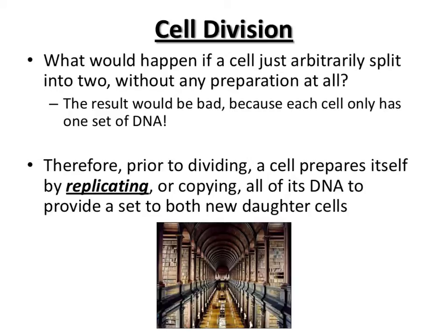If a cell were to just randomly split into two without preparing, that would be bad. The cell would probably not evenly divide all of its organelles, and most importantly the DNA would probably not divide correctly. Think of it like opening a new branch of a library — instead of splitting the books between the two locations, you'd want a new copy of all the books so both libraries can provide whatever you need.